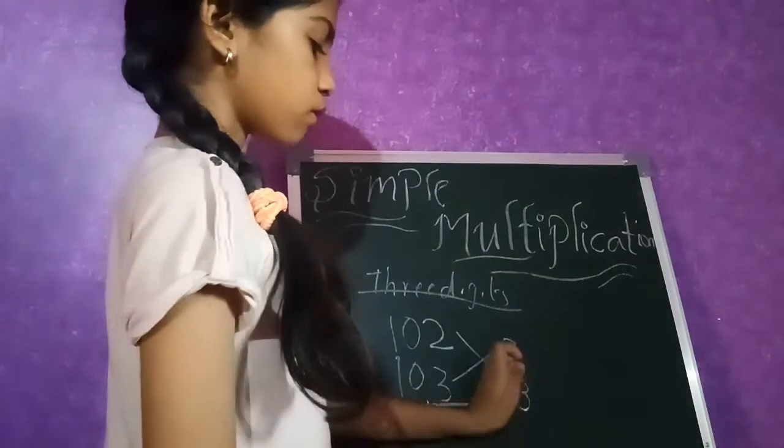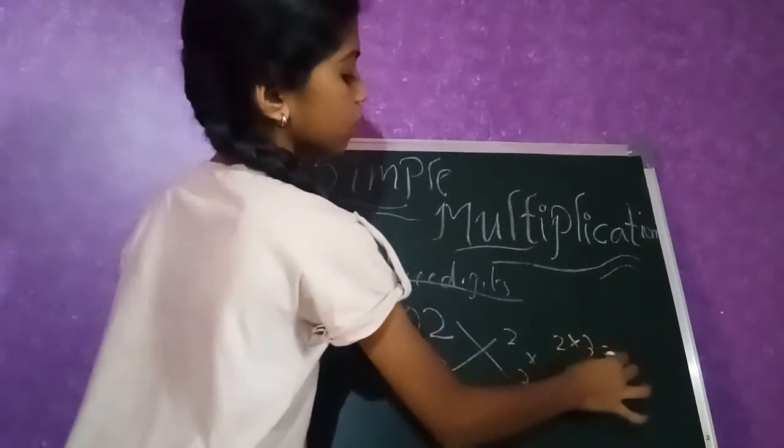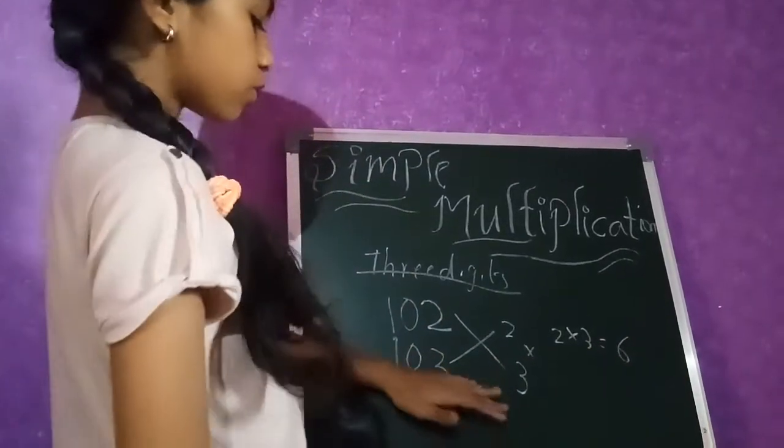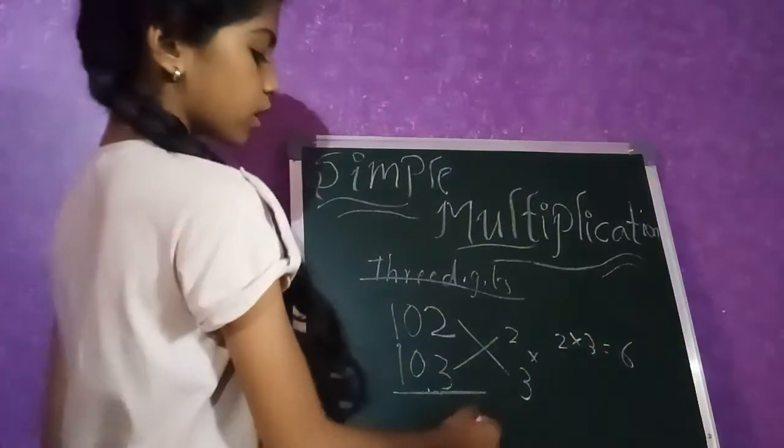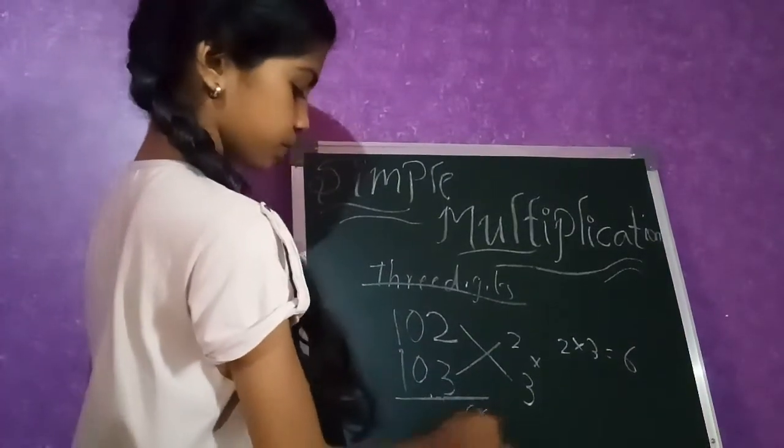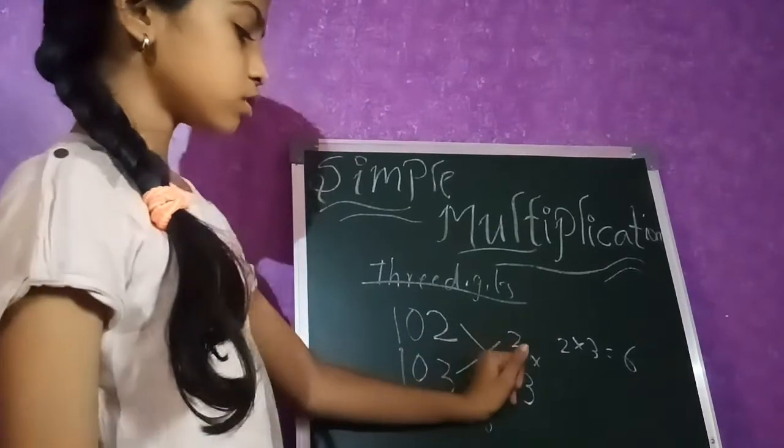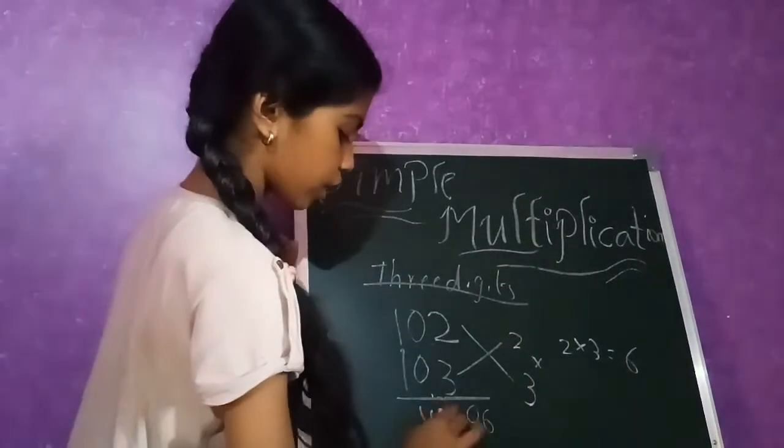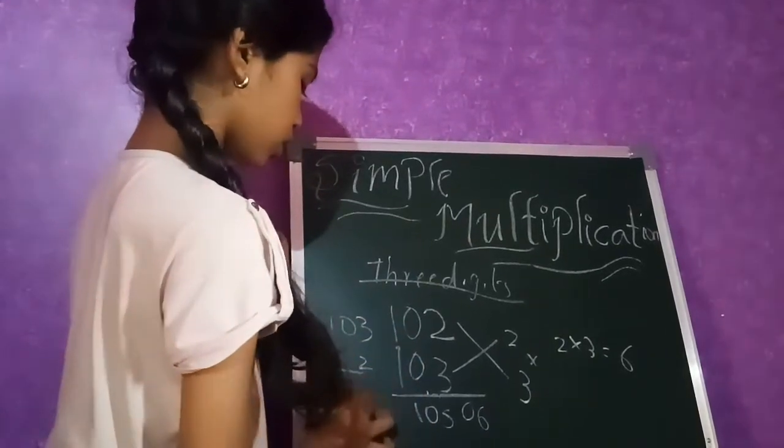First these two you should multiply. 2 into 3, 6. Here see friends, you have 3 digits there. Here only 1 digit. Before 1 digit should keep 0. Okay? Now 103 plus 2, 105.